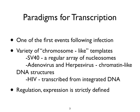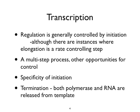One important thing is that regulation of expression of virus genetic information is critical — it's a strictly defined series of events that rely on expression of virus genetic information and availability of host proteins. Much like DNA replication, regulation of transcription is generally controlled by initiation, although there are points where elongation is a rate-limiting step. In particular, in HIV replication there are RNAs that are stalled unless a particular HIV protein is available. It's a multi-step process, and there are many opportunities for control.